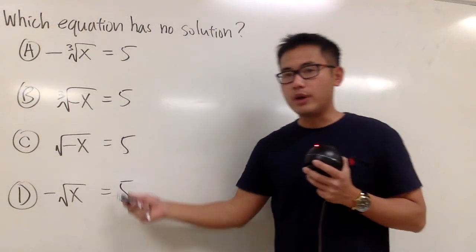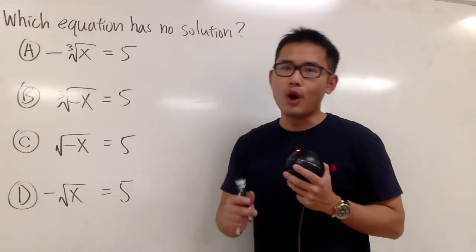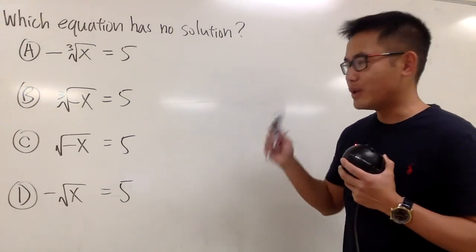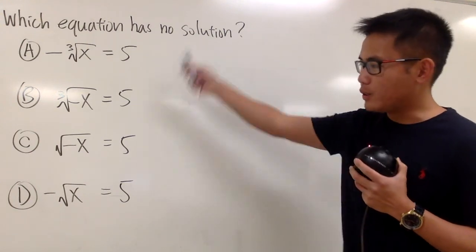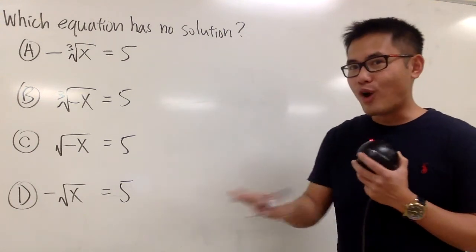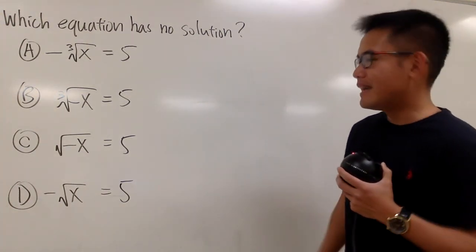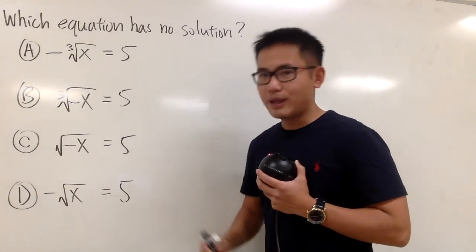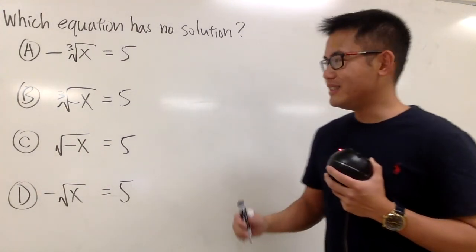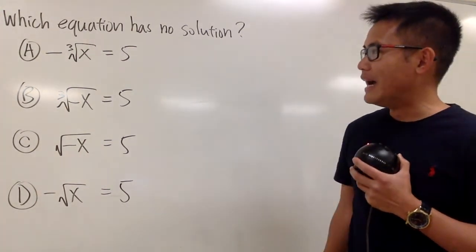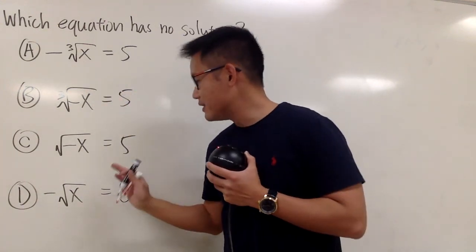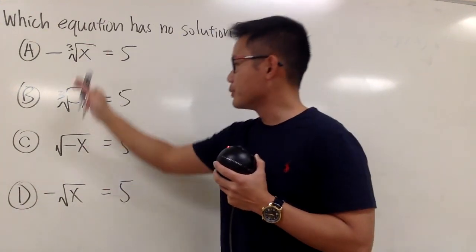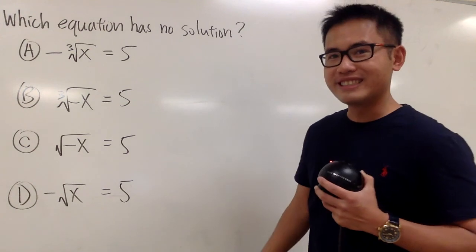Let's talk about which of these equations has no solution. There's one answer, and we're looking for the equation that has no solution. Notice that everything on the right-hand side is equal to 5, and we do have a negative somewhere around, and also the cube root situations versus the square root situations.